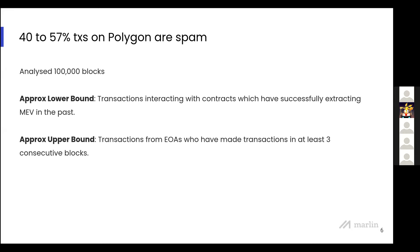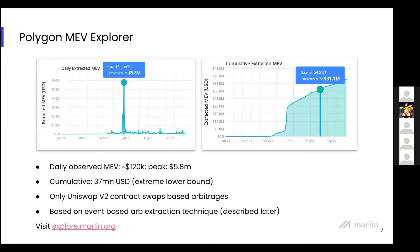On average we see at least $120,000 worth of MEV extracted every day. From January 2021 to October 2021 we see a cumulative extraction of over $37 million, and that's just for Uniswap V2 contract swap-based arbitrage. It does not include sophisticated methods like flash loans, sandwiches, flash swaps, or use of other DeFi products like Balancer. All of this data is extracted from our event-based arbitrage detection system, which is a modification on top of MEV Inspect.